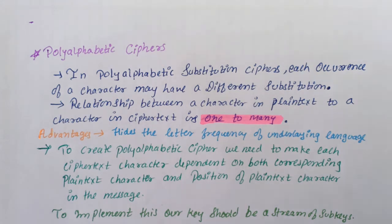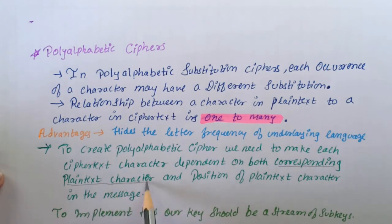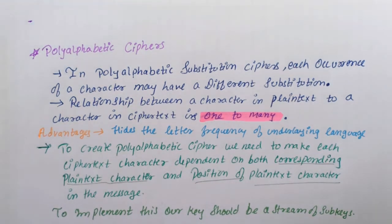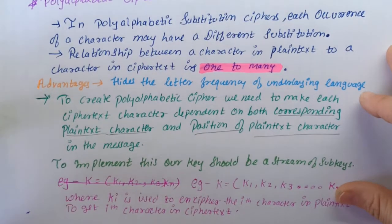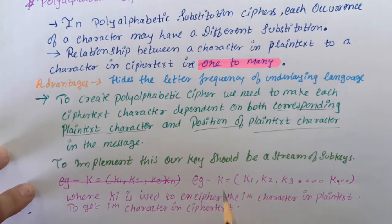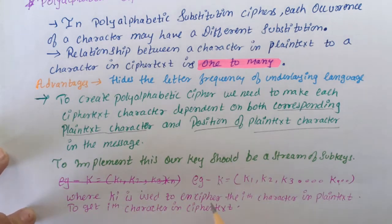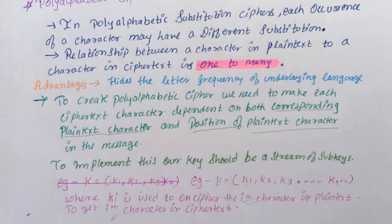To create polyalphabetic ciphers we need to make each cipher text character dependent on both the corresponding plain text character and the position of that plain text character in the message. To implement this, our key should be a stream of sub keys — K1, K2, K3, and so on — where Ki is used to encipher the i-th character in plain text to get the i-th character in cipher text. Each sub key depends on the position of the plain text character.